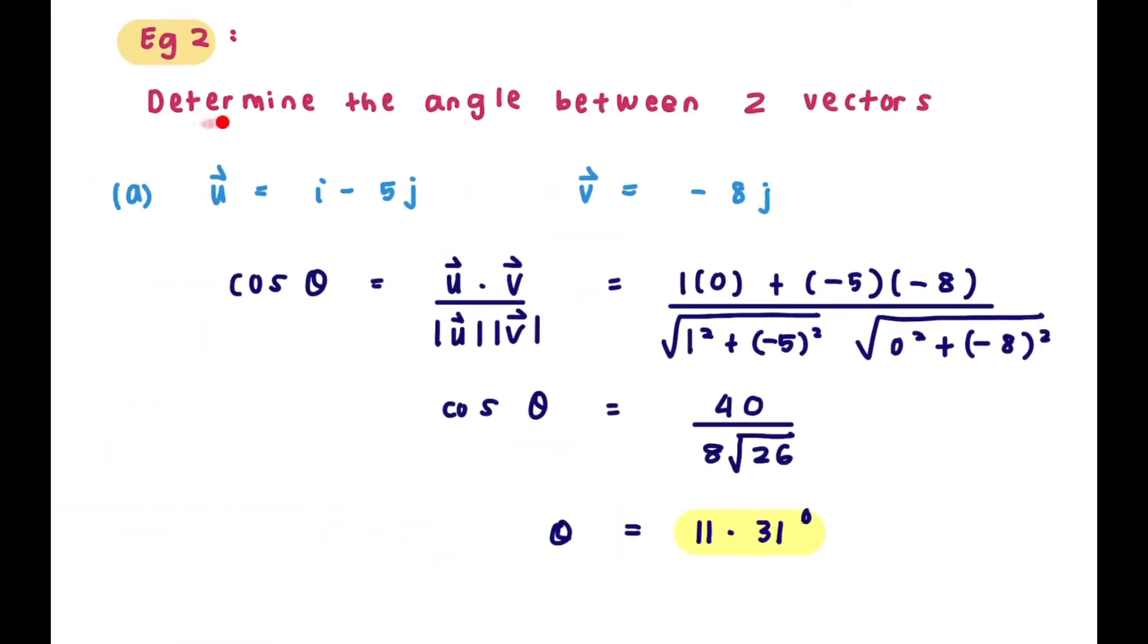Now let's see example two, determine the angle between two vectors. Let's say you have two vectors here, u which is i minus 5j and also v minus 8j. So let's use the formula cos theta is u dot v over magnitude u magnitude v.